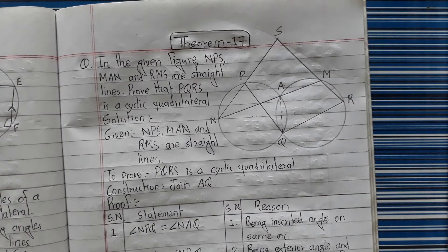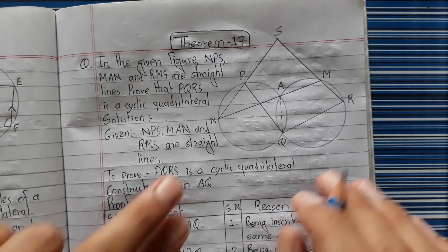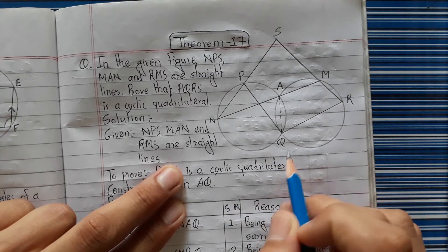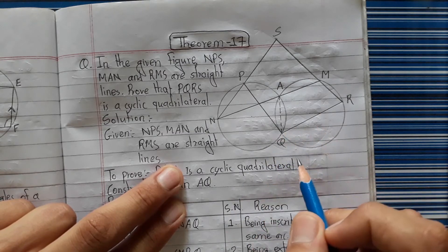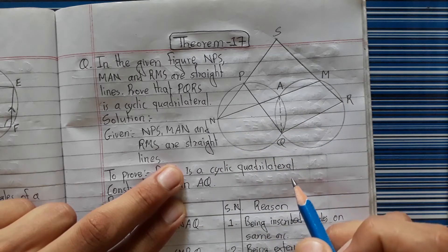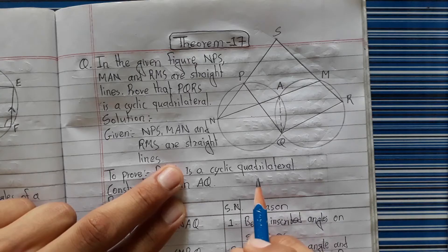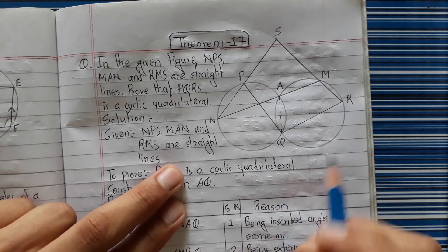Theorem number 17. In the given figure, there are circles shown. The question shows a figure with circles and lines. This looks like it might be a straightforward question.